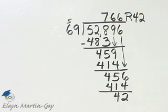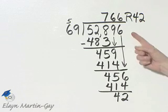How do you check? Multiply 69 times 766 and add to that 42. You should get 52,896.